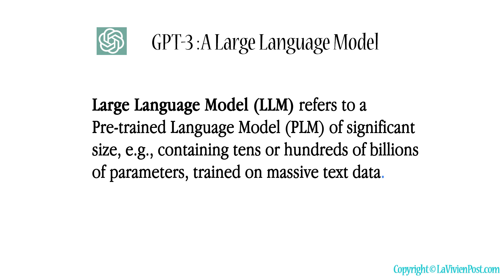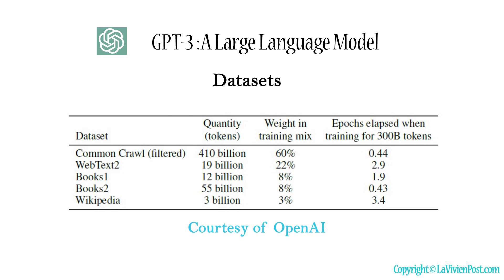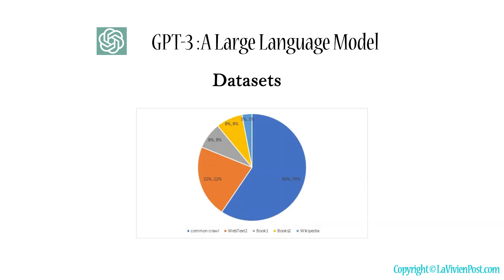The research community coined the term large language models for pre-trained language models of significant size, containing tens or hundreds of billions of parameters trained on massive text data. By pre-training on a mixture of text data from diverse sources, large language models can acquire a broad scope of knowledge and may exhibit a strong generalization capacity. When mixing different sources, one needs to carefully set the distribution of pre-training data, since it is also likely to affect the performance of large language models on downstream tasks.